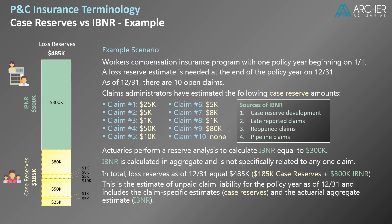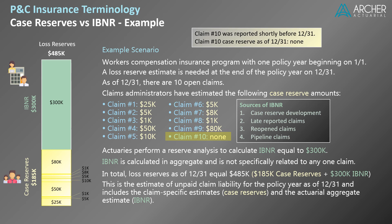Lastly, let's look at claim number 10. As it turns out, this claim was reported shortly before 12/31. Claims administrators had not completed the claim review and therefore established no case reserves as of 12/31. This is an example of a pipeline claim, and once again, any payments related to the claim must be accounted for in the 12/31 estimate of IBNR.